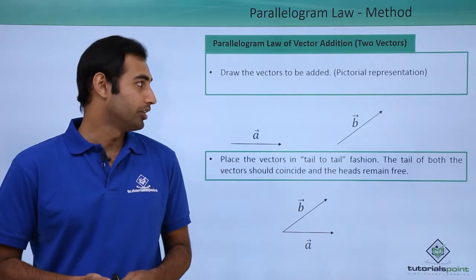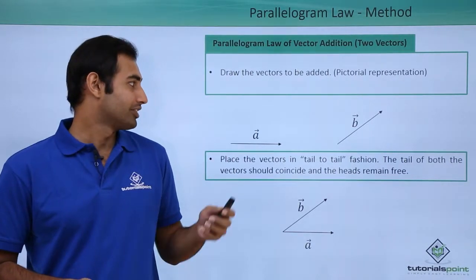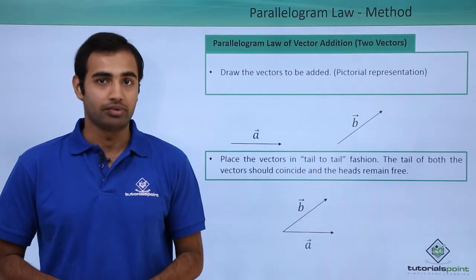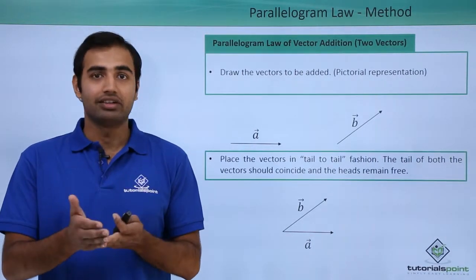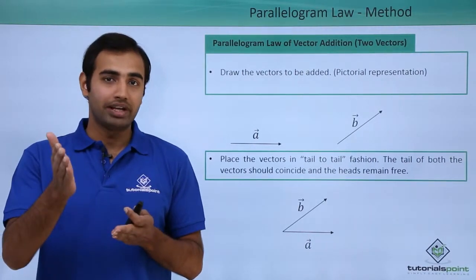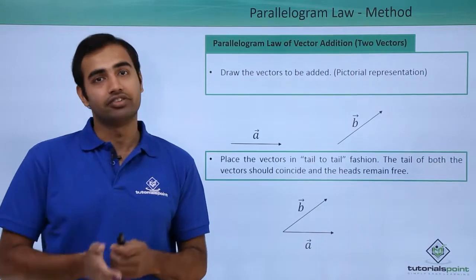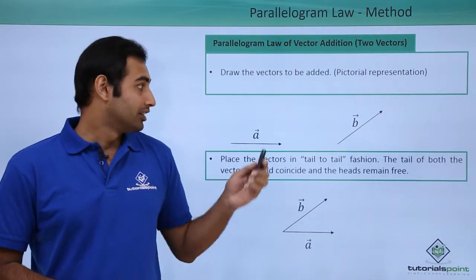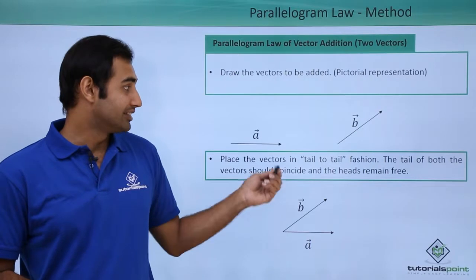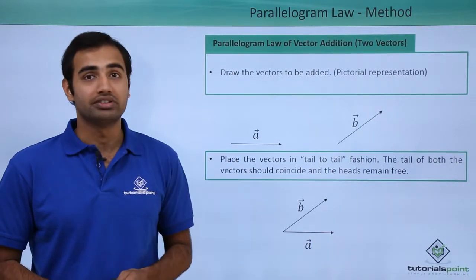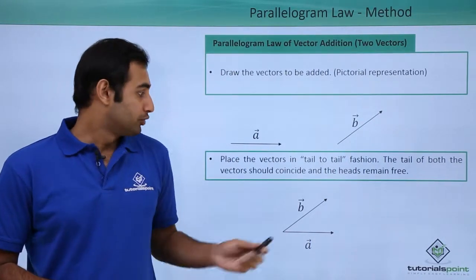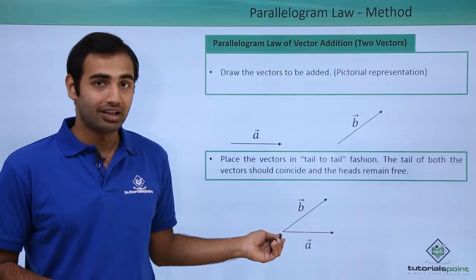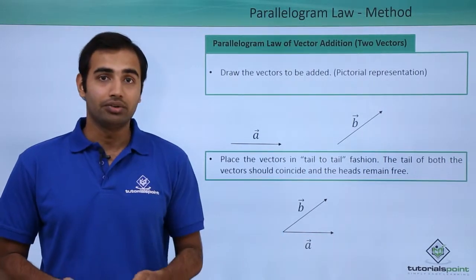On the board you can see I have considered two vectors A and B that I am supposed to add using parallelogram law. Now unlike triangle law, I have to place the vectors in a slightly different way. The way I place the vectors is that their tails should be coinciding as shown in the figure. So here you can see the tail of both B and A start at the same point.